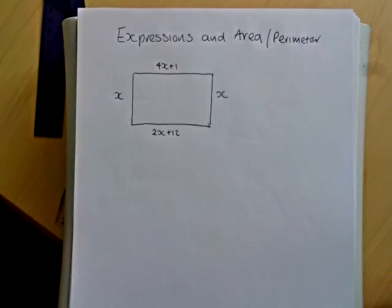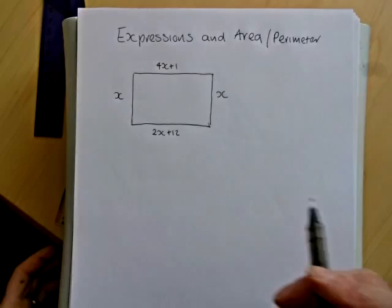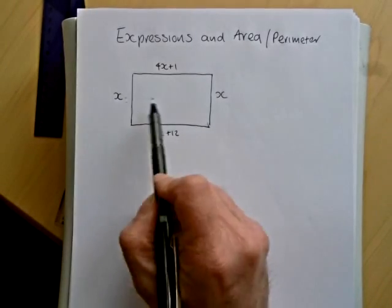This short video will show you how we can connect expressions to area and perimeter. So we've been given some information about a rectangle and we've been told that one pair of sides are equal to x.